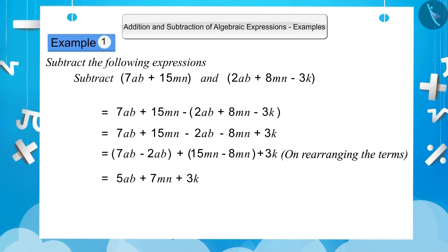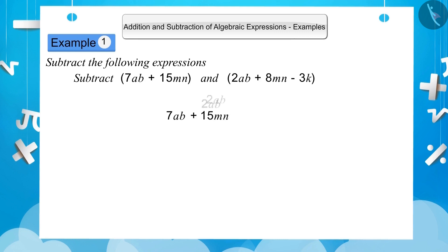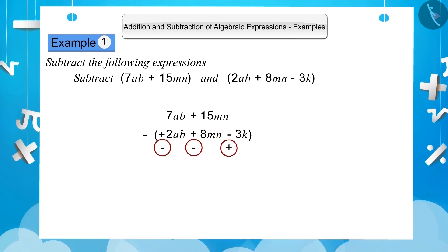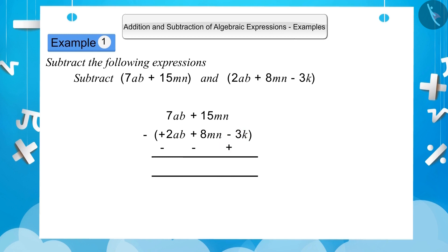Let us solve it by another method. In this method, we place the expressions one below the other so that like terms remain in the same line. We place 2ab under 7ab, 8mn below 15mn, and keep 3k apart as it is an unlike term. The signs of the expression below become opposite: 2ab becomes minus 2ab, 8mn becomes minus 8mn, and minus 3k becomes plus 3k. By subtracting, we get 5ab plus 7mn plus 3k.